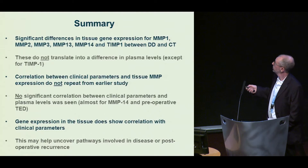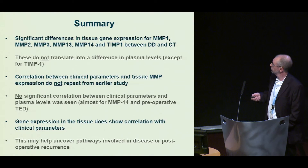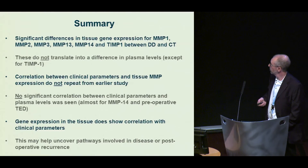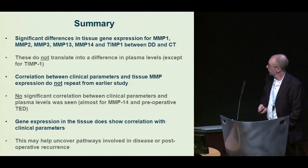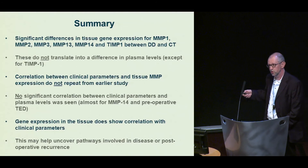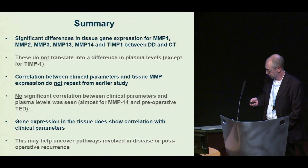To summarize: we do still see significant differences in these genes between Dupuytren's disease and carpal tunnel, but they don't translate into differences in circulating levels other than for TIMP1. We still see some correlation between clinical parameters and tissue gene expression, though not as strongly as in our initial cohort, and we don't see significant correlation between clinical parameters and plasma levels other than for MMP14 and pre-operative TED — a gene and protein that keeps appearing. However, in the array data we see a lot of very tight correlation, and these may be genes regulated by or regulating tension, potentially uncovering pathways involved in the disease or post-operative recurrence. We'll search amongst those genes for those that are extracellular and measurable in circulation to see if they correspond to biomarkers.